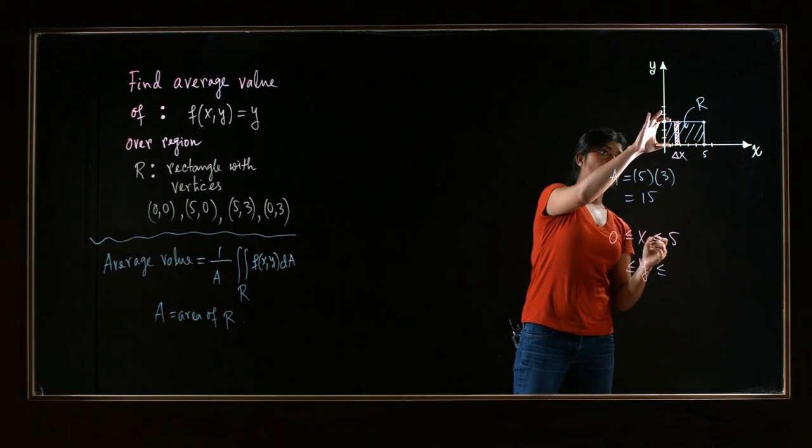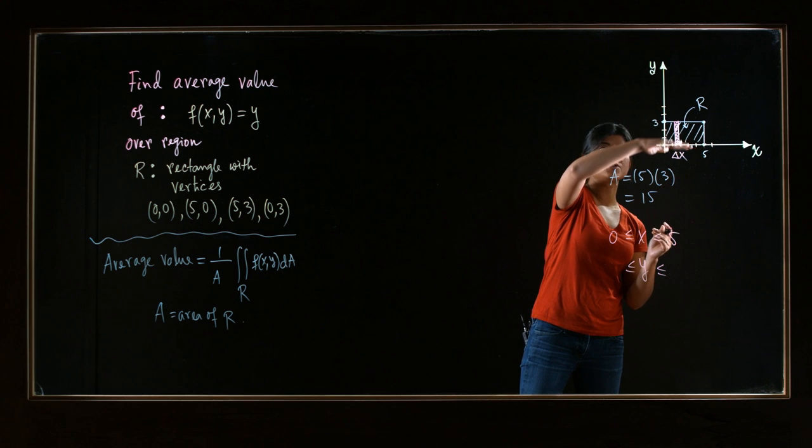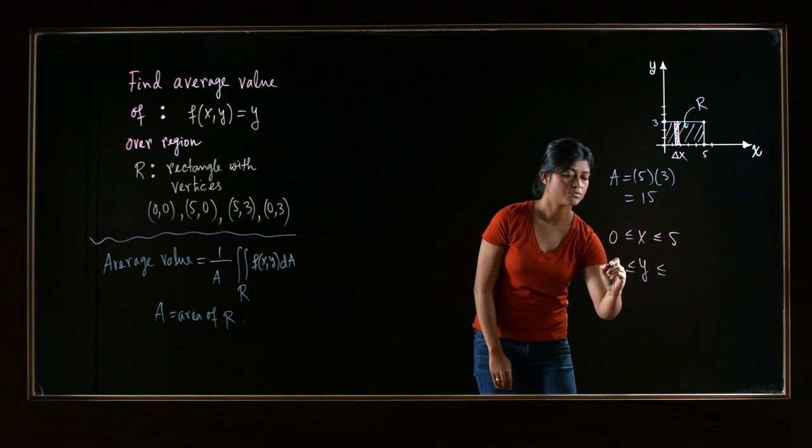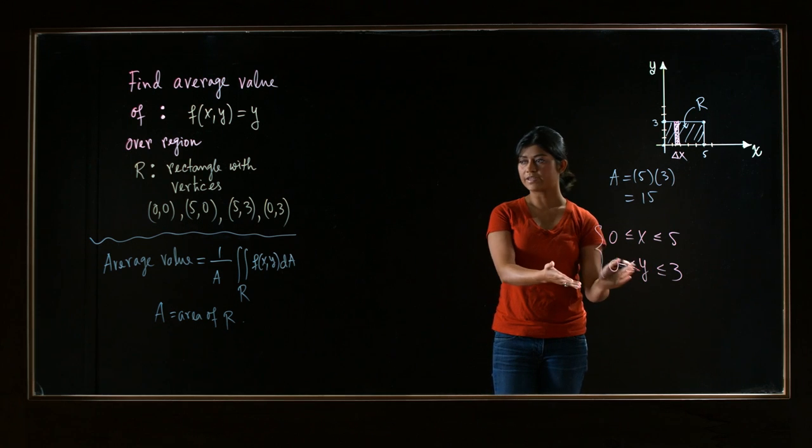Now what about y? Look at the length of the rectangle itself. So it starts at the x-axis, so 0, and goes up to 3. So these are the bounds of x and y.